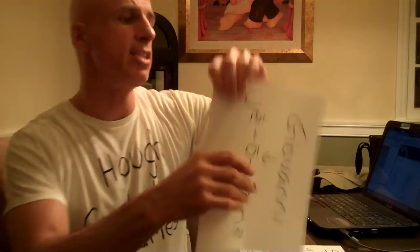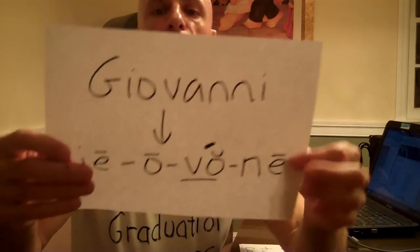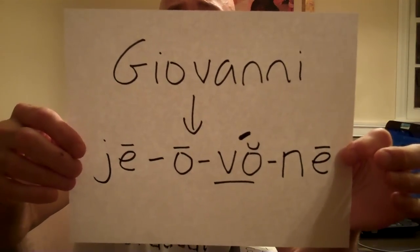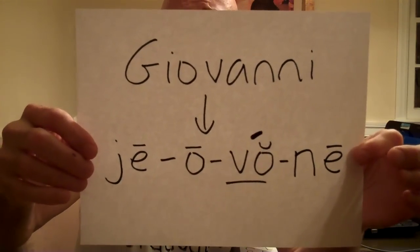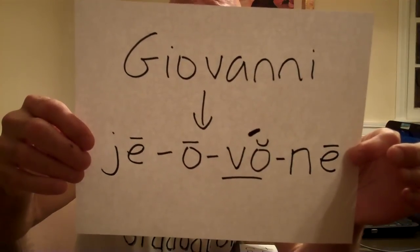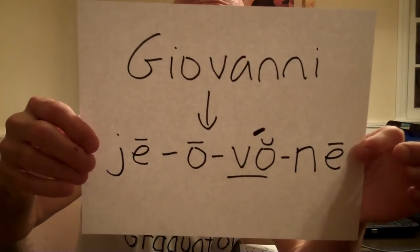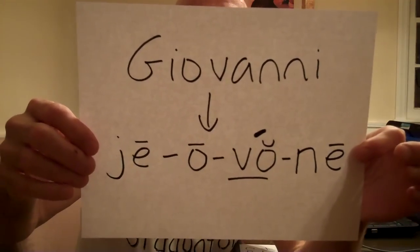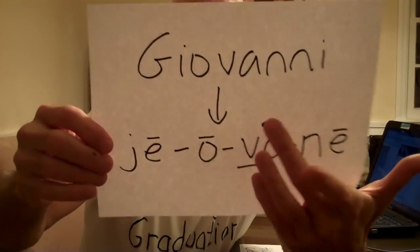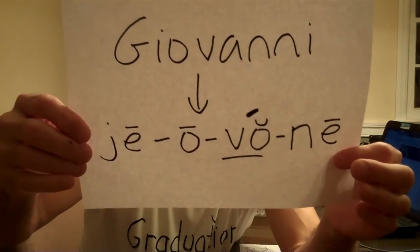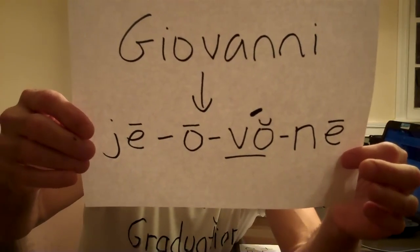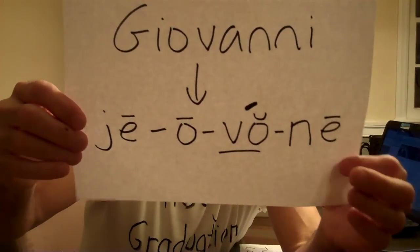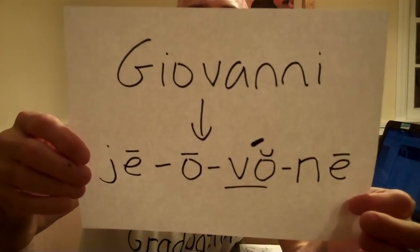Giovanni is one of my students from Brazil. Most people know how to say it, but don't ever assume. I have a J-E hard E, then hard O, then soft O — 'va' — like in 'mop' — and then hard E at the end: 'Giovanni.' Notice I marked the stressed syllable, so they know it's not 'Giovanni,' not 'Giovanni,' not 'Giovanni' — it's 'Giovanni.' That's where the stress falls when Mr. Tao says it.